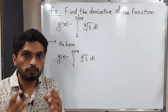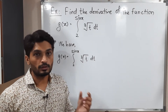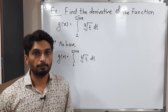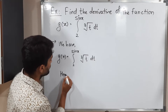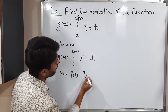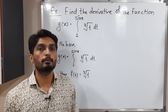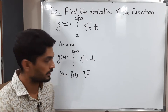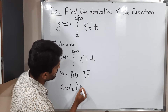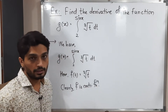First we will focus on the function inside the integral. The function is cube root of t. We are taking an integration of that function and we call it f of t. So f of t is equal to cube root of t. It is a continuous function, and that is why the First Fundamental Theorem of Calculus is applicable here. Clearly, f is a continuous function since the graph of this function is continuous.